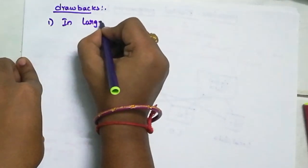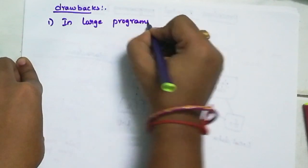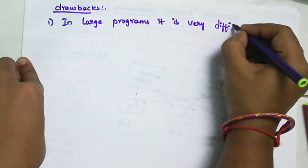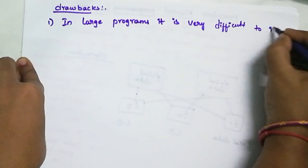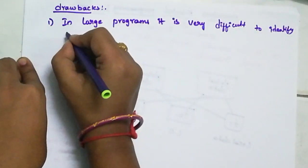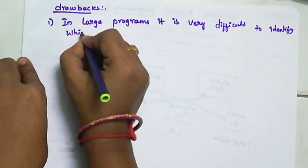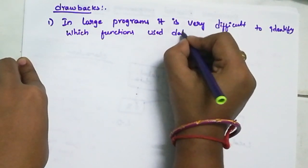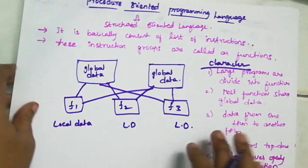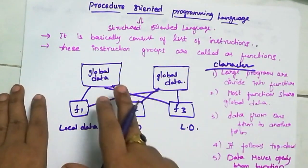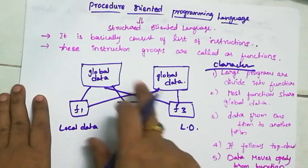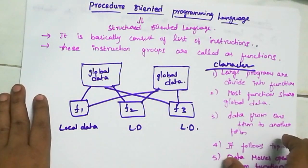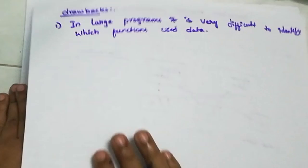In large programs, it is very difficult to identify which functions use data. For example, some global data - you have to understand which functions use data. If you have multiple functions, if you have a problem, to identify which function is very difficult. So that is one of the drawbacks.